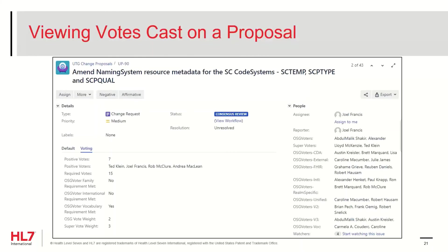Proposals progress by accumulating a total number of required vote points. OSG voter and super voter groups are weighted by accumulating multiple vote points per affirmative or negative cast. If you're interested in learning more details about the voting groups, weights, and computations, please watch the session for reviewing and voting on HL7 change proposals.